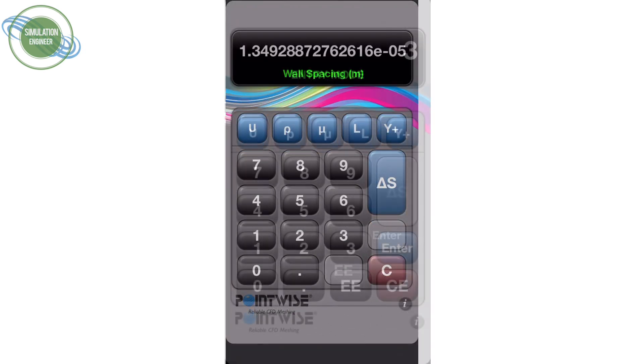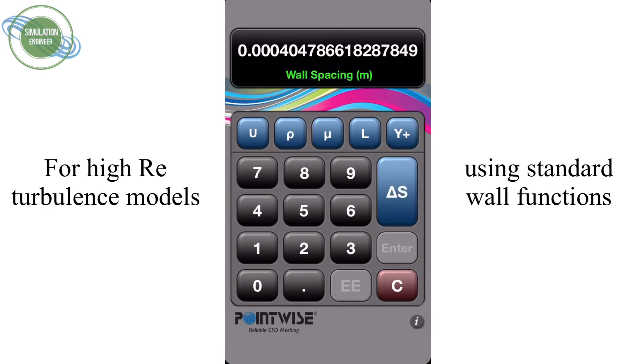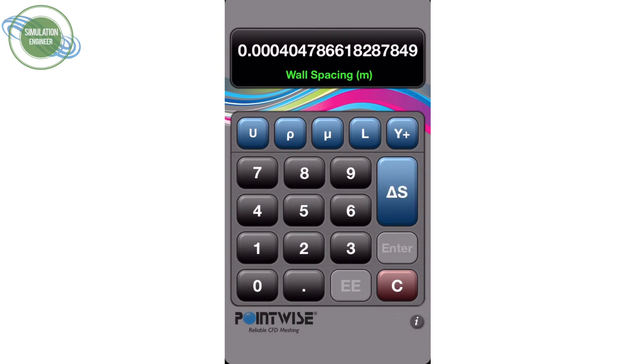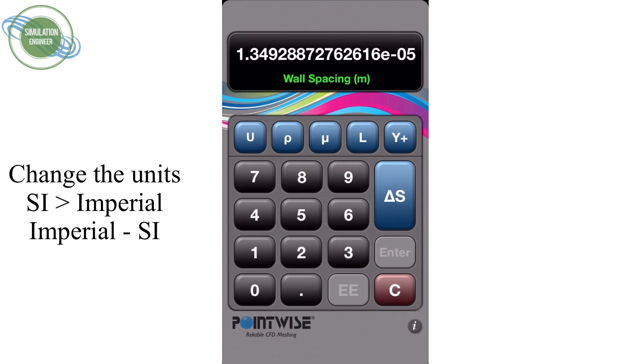Similarly, for high Reynolds number, we need a y plus of around 30. Once we press delta s without changing the other parameters, we will get the first initial wall spacing for our CFD computations. Another nice feature is that you can change the units from SI to imperial units.